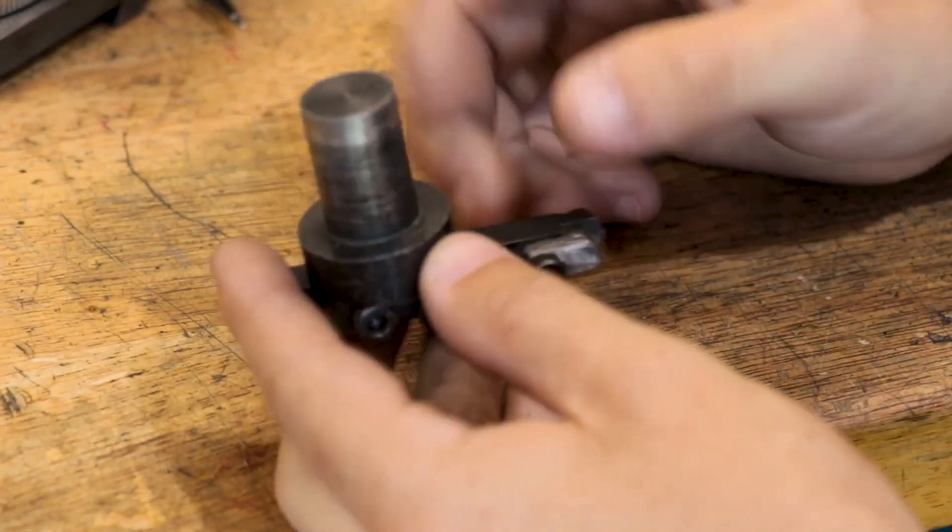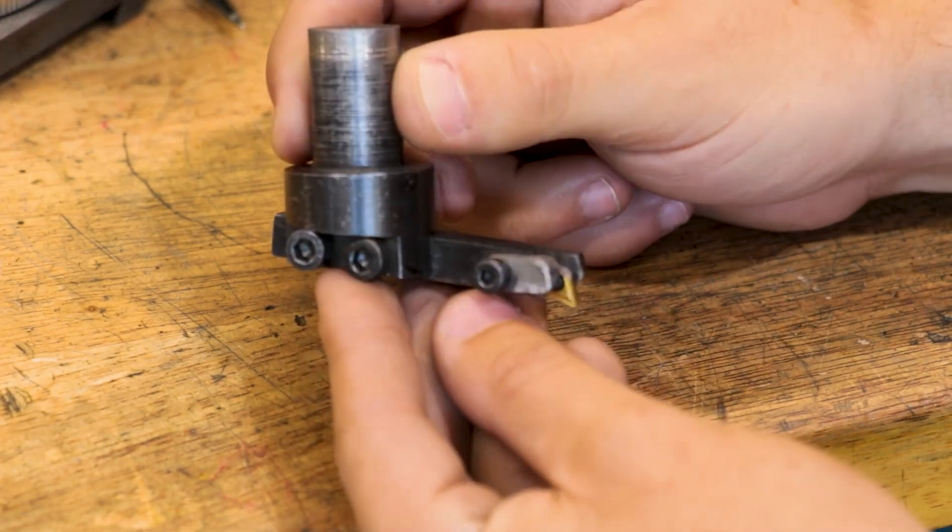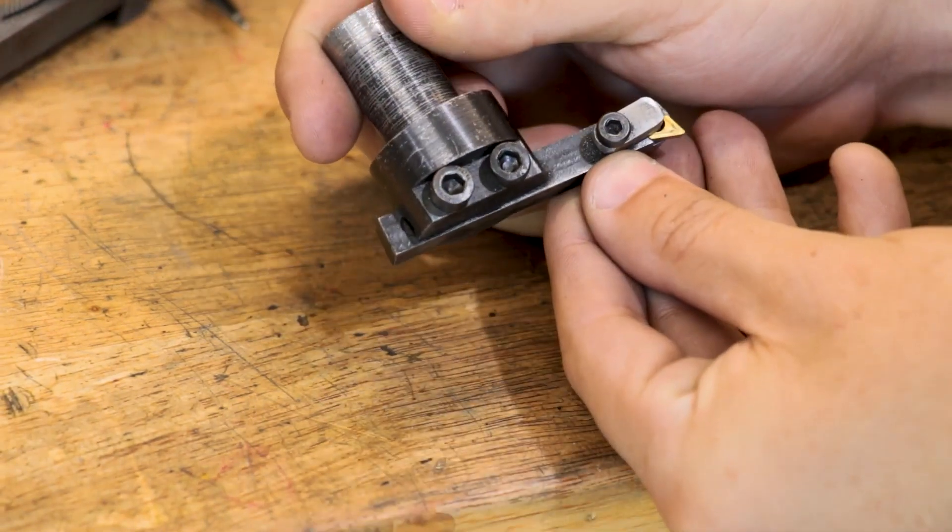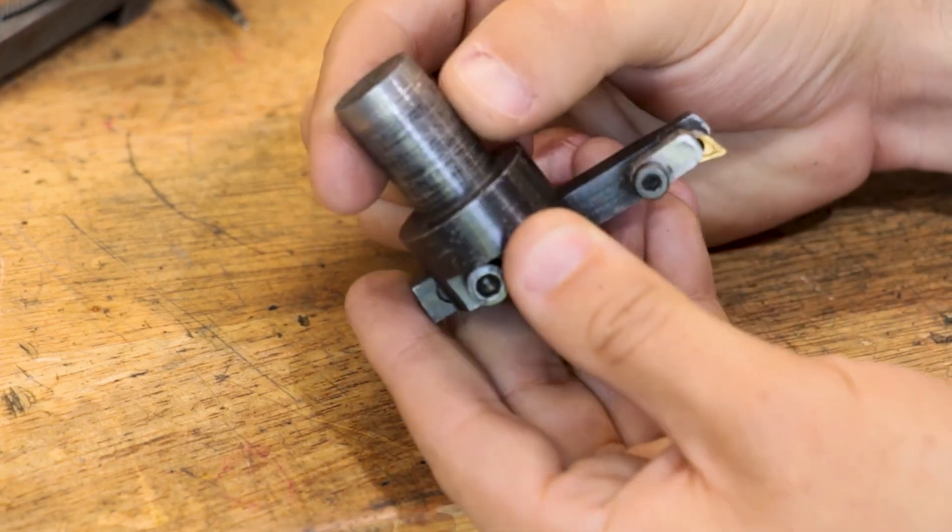I'm sure most of you know what this is. It's the fly cutter that I made when I first got the milling machine, and since making it, it's probably been used in every single one of my projects that's involved the milling machine.